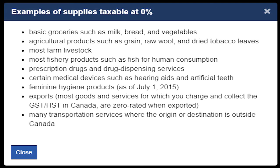Some items are considered zero rated, which is different from exempt. For example, when I provide my services to a client in Canada they're taxable, but when I work for people in the U.S. they're zero rated, or taxable at zero percent. Other examples are the grocery items that most of us would be familiar with. An important distinction here is that if your services are zero rated you can still claim input tax credits on the expenses that you incur in order to earn that income.